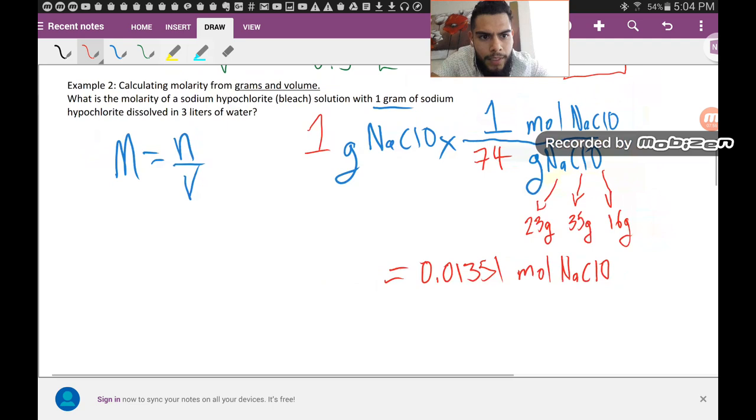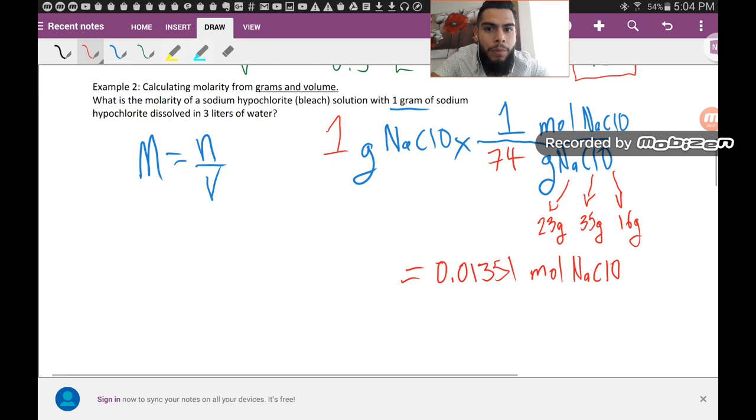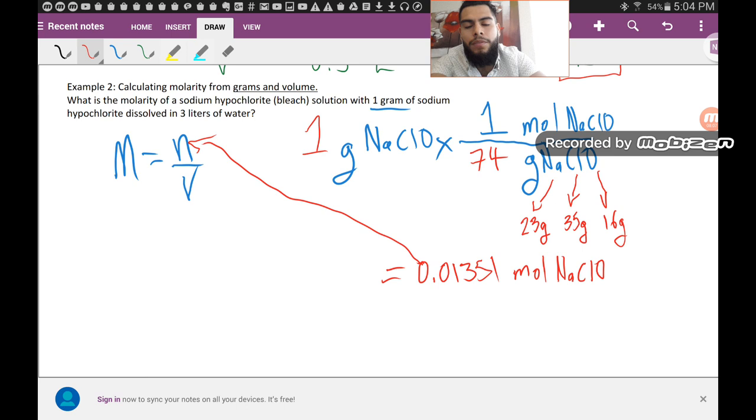And so now we have the number of moles for sodium hypochlorite, and we can divide it. We just calculated the number of moles. And now we just have to divide it by the three liters of water, which is the volume.